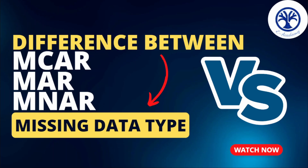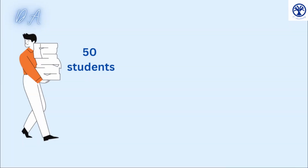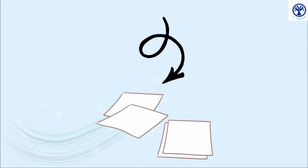Let's start with an example to understand these types. We have a teacher named DA who is returning to his office after conducting a math test for his class of 50 students. Accidentally, all of the tests fell down and there was some wind, and a few papers vanished from the scene.